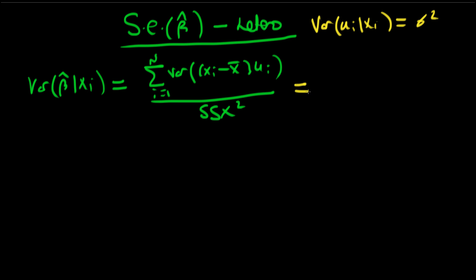And that enabled us to write this as equal to the sigma squared times the sum of i equals 1 to n of xi minus x-bar all squared, divided by ssx all squared. And remember that basically this thing on the top cancelled with one of these on the bottom, so we got left with our variance of beta hat being equal to sigma squared divided by ssx.